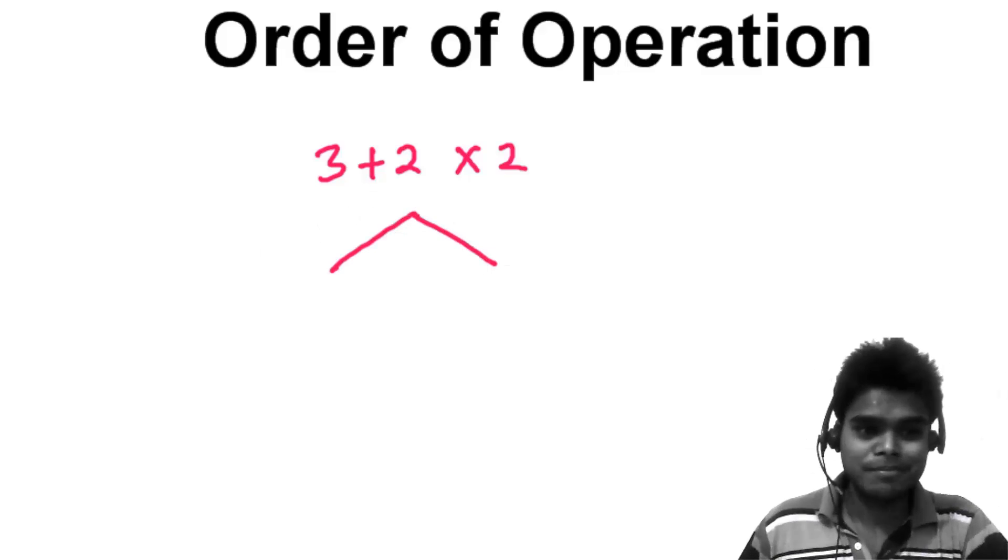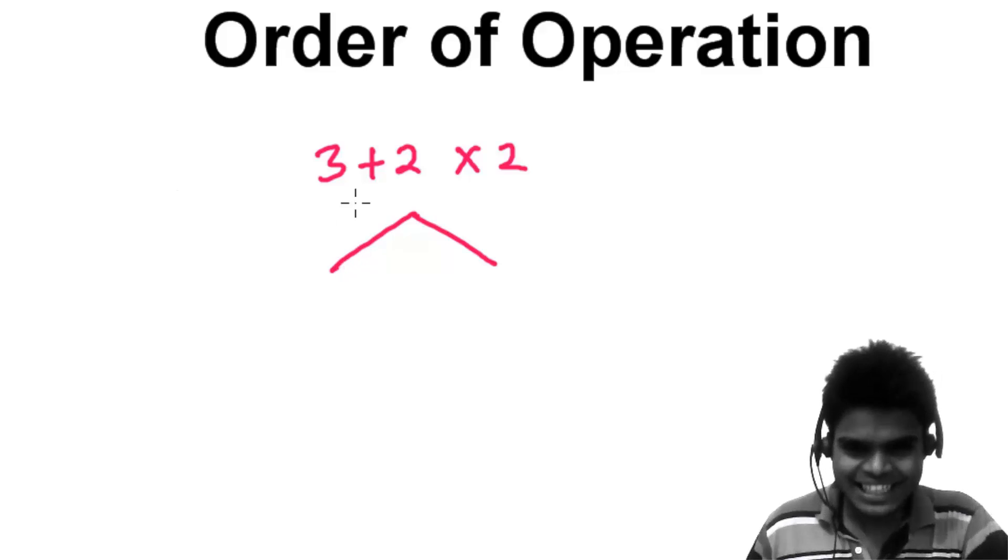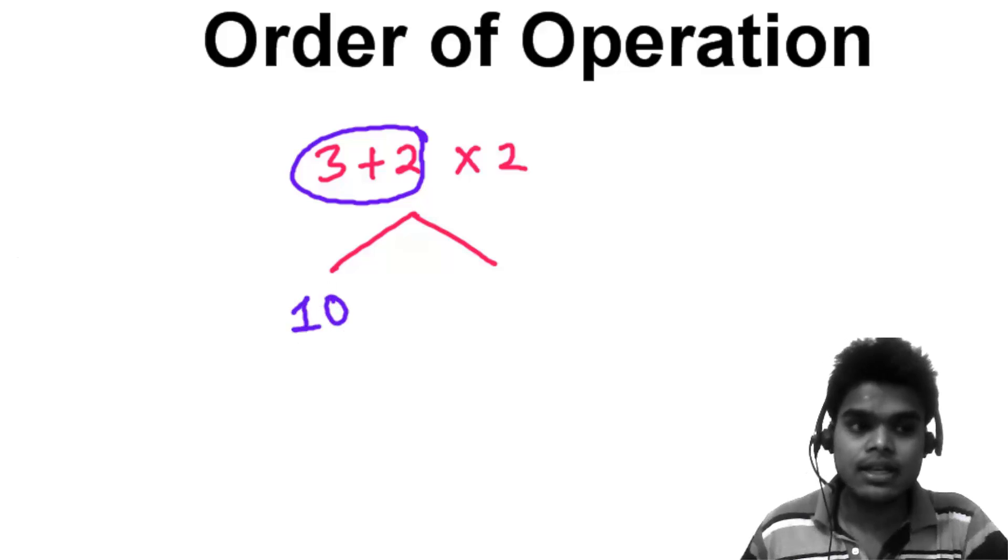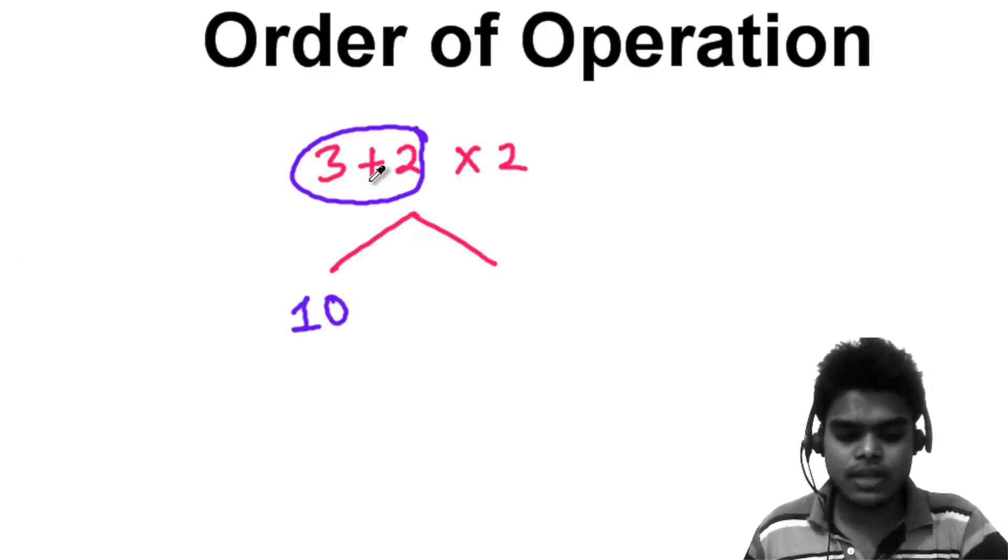Some people will add 3 plus 2 to get 5, then multiply by 2 to get 10. Some people will multiply 2 times 2 first, which is 4, and then 4 plus 3 equals 7.